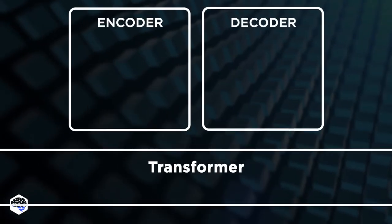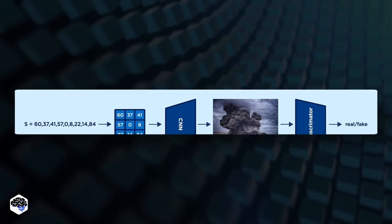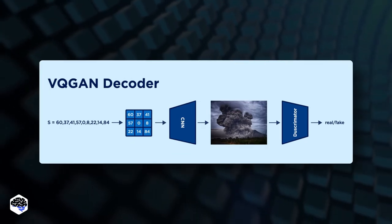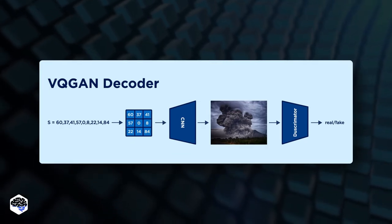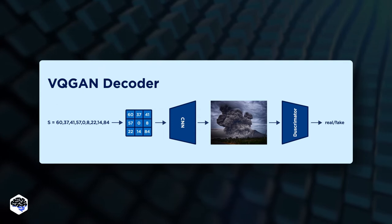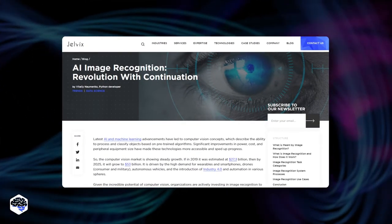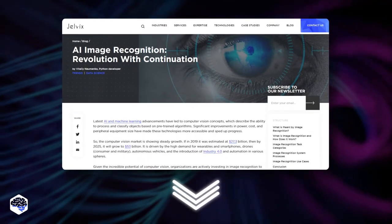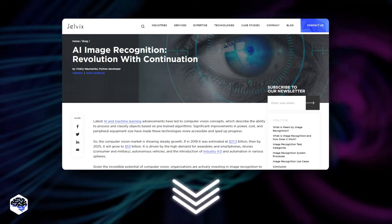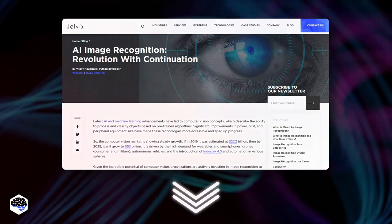The decoder does the reverse work of the encoder. From the sequence of integers — codebook indices — it recreates the image. If you want to know more about AI image recognition, check out the article we've prepared. The link is in the description.